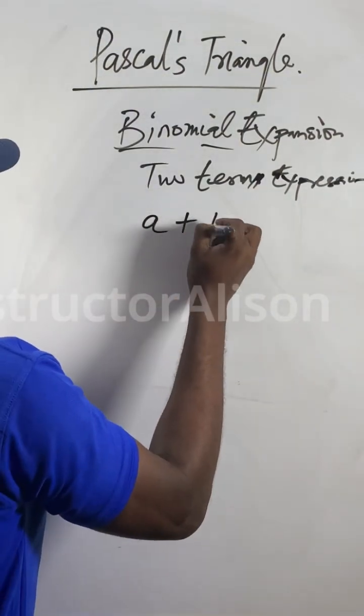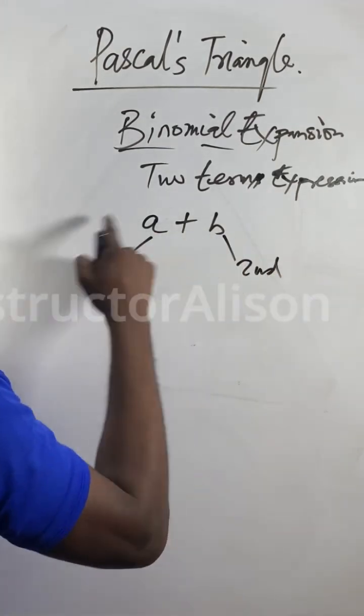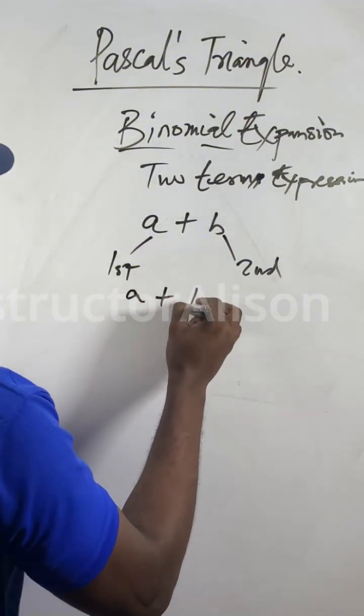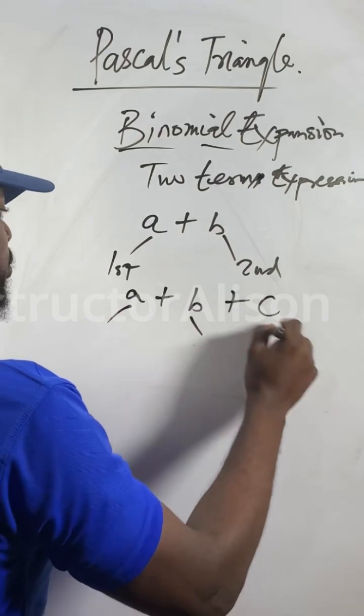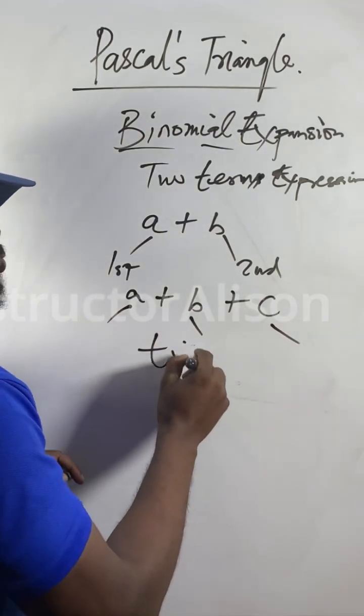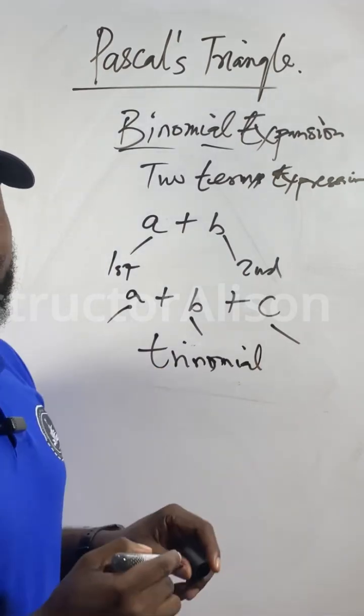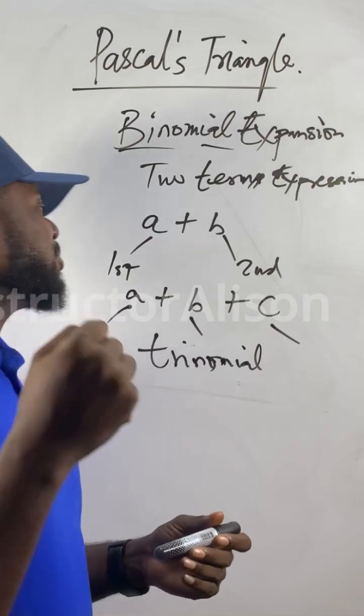What do you mean? If I get a plus b, this is the first term, this is the second term. So when you get two-term expression, they call it binomial. What if I get a plus b plus c? So now three-term expression: first term, second term, third term. This one is called trinomial. You never heard of it before? Clap for me now. Clap with you. Okay, thank you. Chop knuckle, nice one.